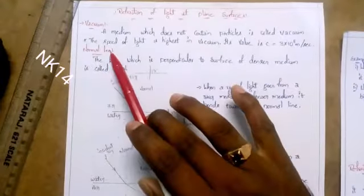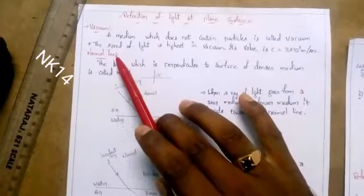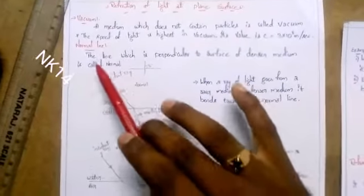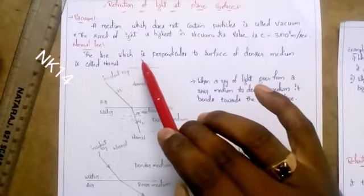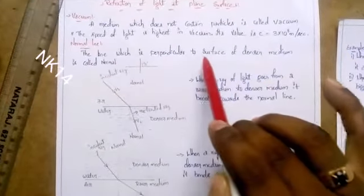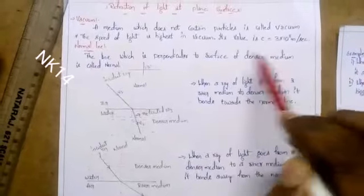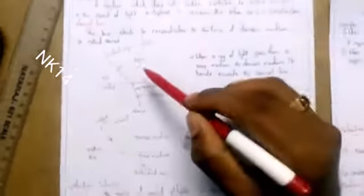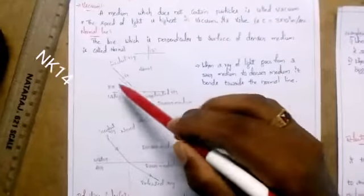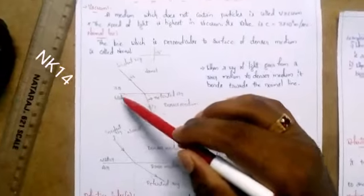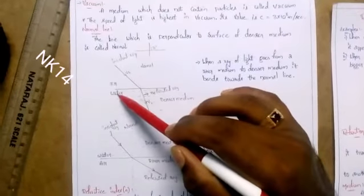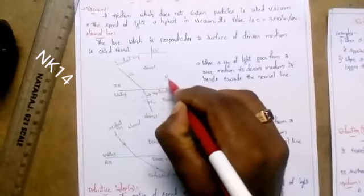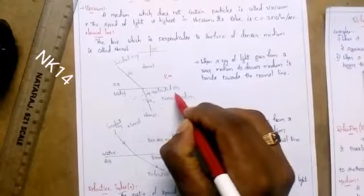Next, the normal line — this is the question I asked in my previous video. The line which is perpendicular to the surface of the denser medium is called the normal. For example, taking air as the rarer medium and water as the denser medium.